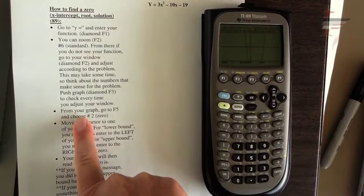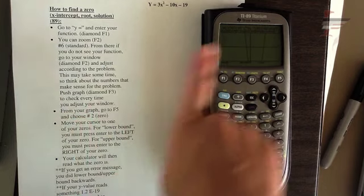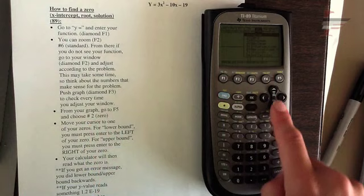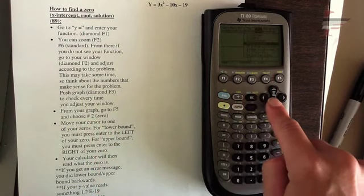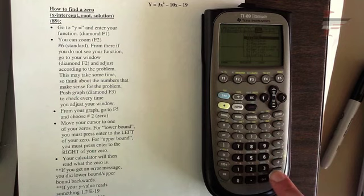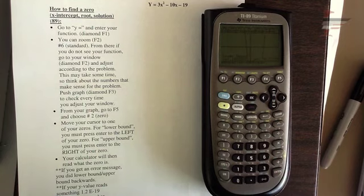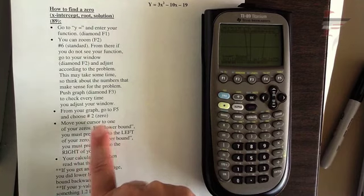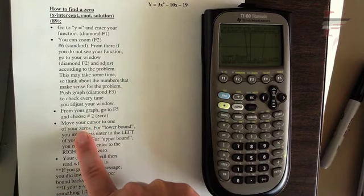So next bullet from my graph, I'm going to go to F5, which again is math, and then choose number two, which is zero. Notice your min and max are here also, but we're going with zeros now for x-intercepts. So choosing that is going to give you the whole lower bound, upper bound again, but a little bit different here. You want to move your cursor to one of your zeros.